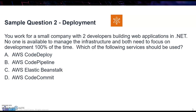The next question: you work for a small company with two developers building web applications in .NET. No one is available to manage the infrastructure and both developers need to focus on development 100% of the time. Which of the following services should be used? The options are CodeDeploy, CodePipeline, Elastic Beanstalk, and CodeCommit — all of these are valid AWS services.